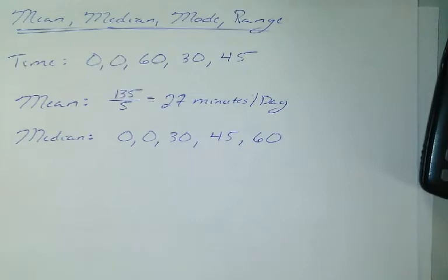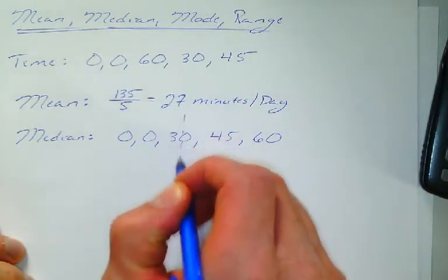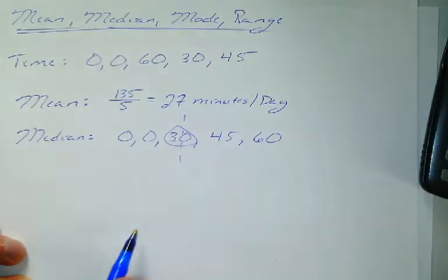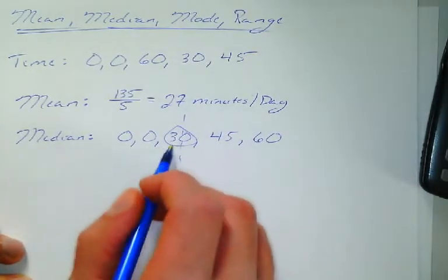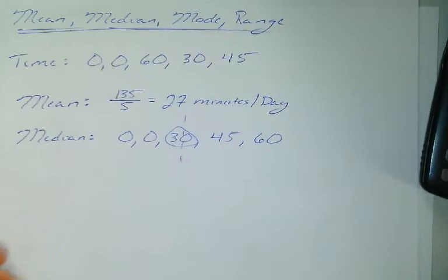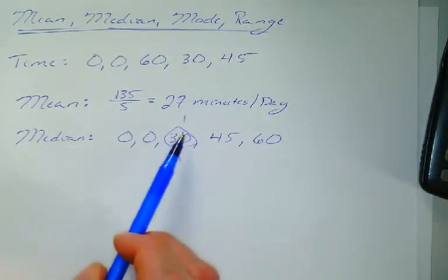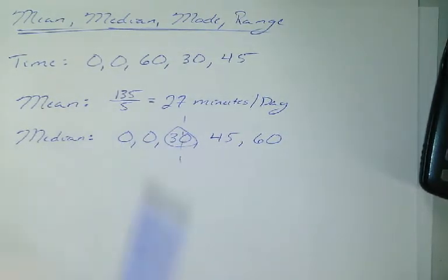Now, since I have an odd number of terms, that middle term is going to fall smack dab in the middle. It's 30. I've got two terms above it, two terms below it. So, my median, in this case, is 30. Now, what that tells me is that half the time, I play for more than 30 minutes. Half the time, I play for less than 30 minutes. So, really, medians cut your data in half. The upper 50%, lower 50%.